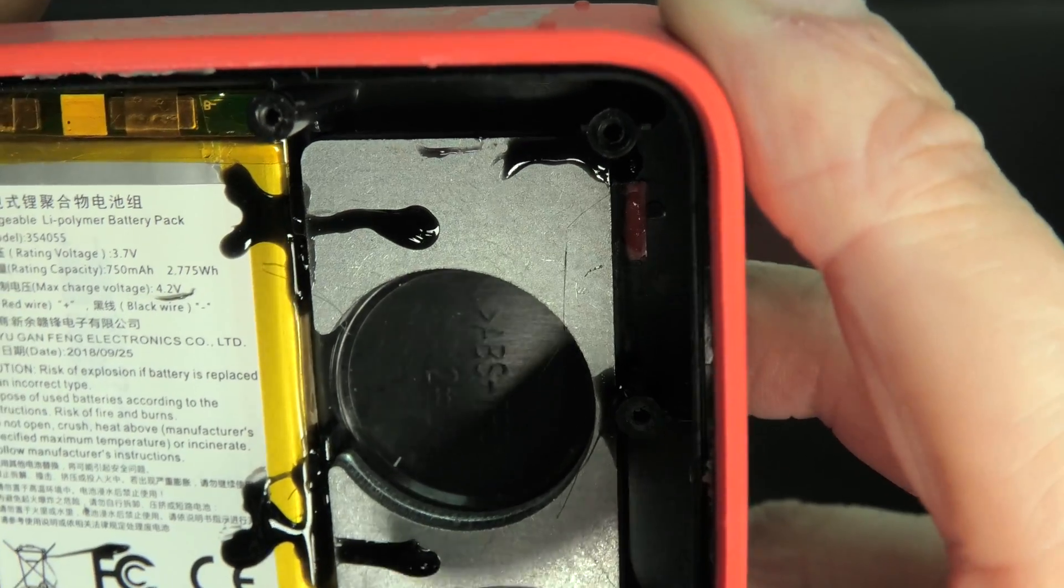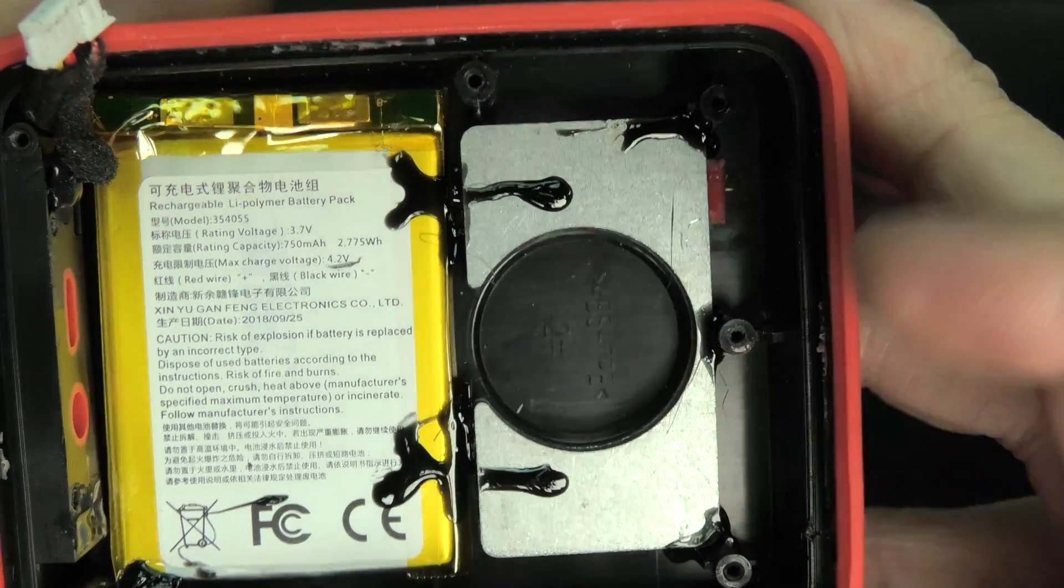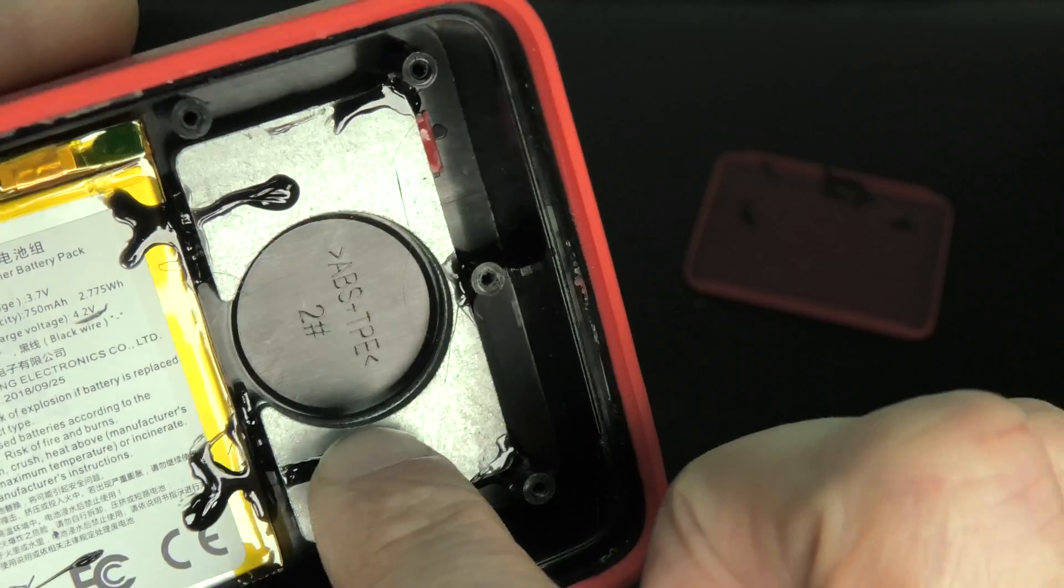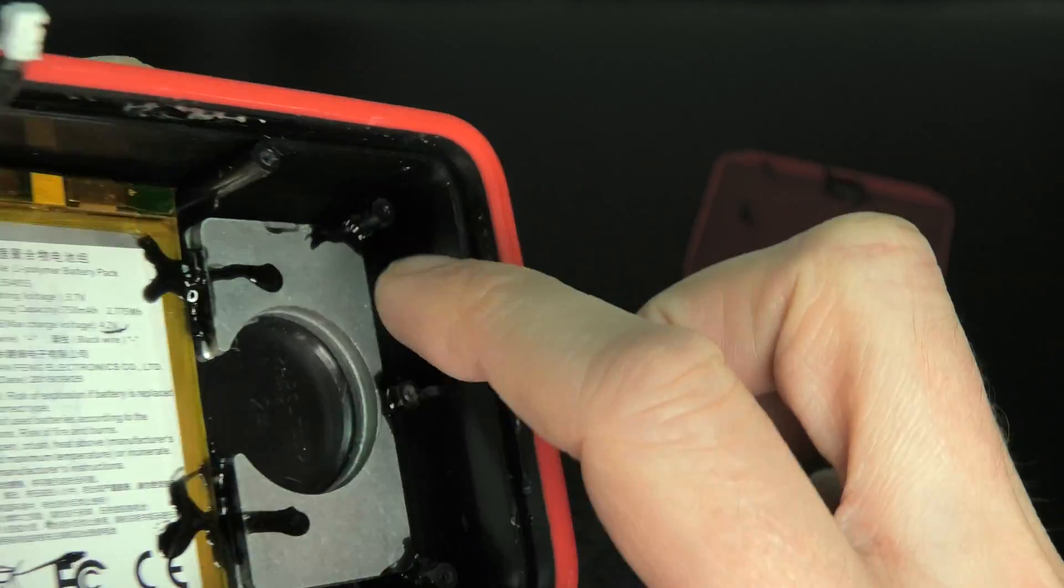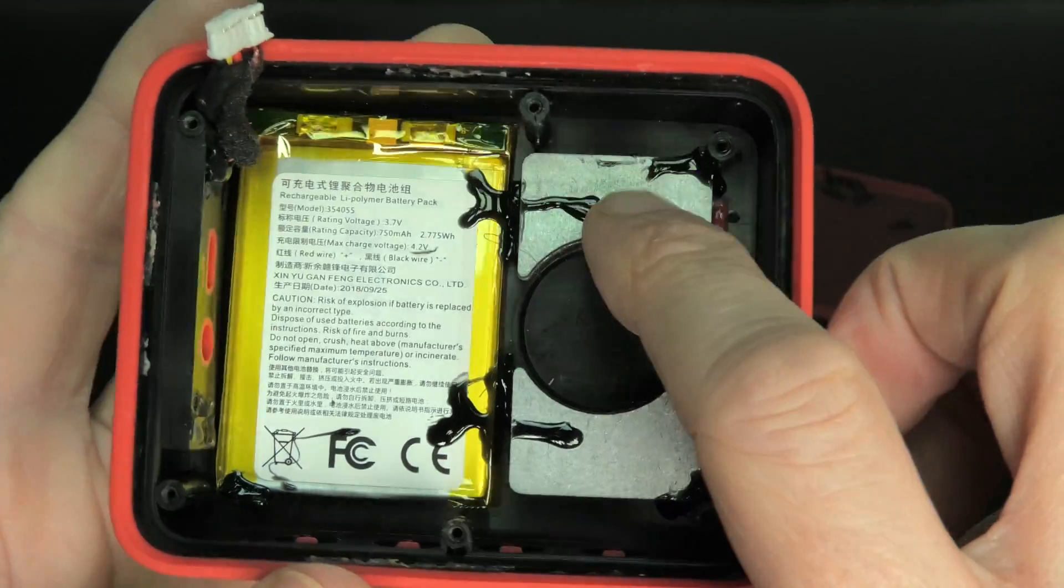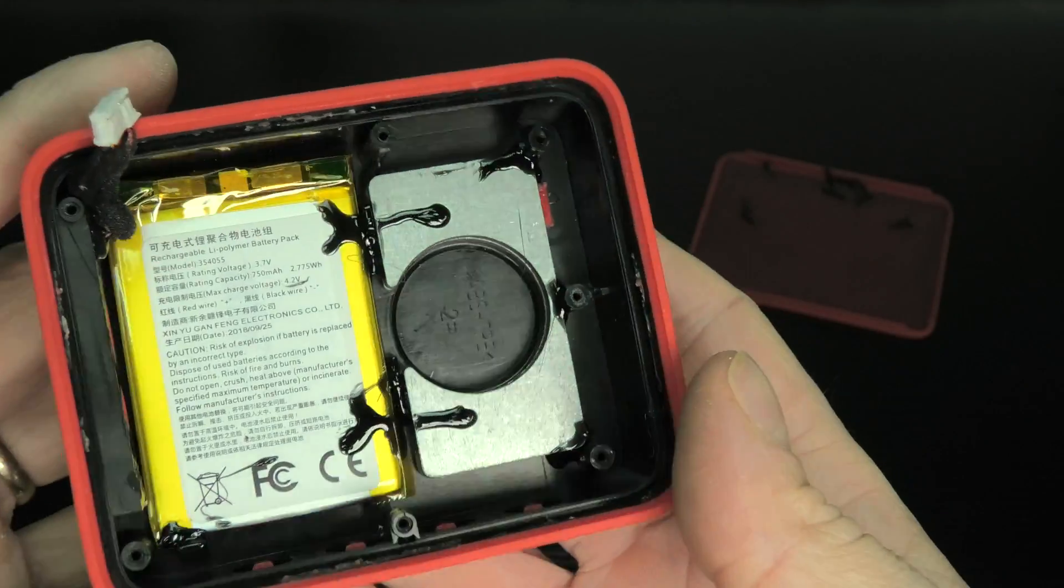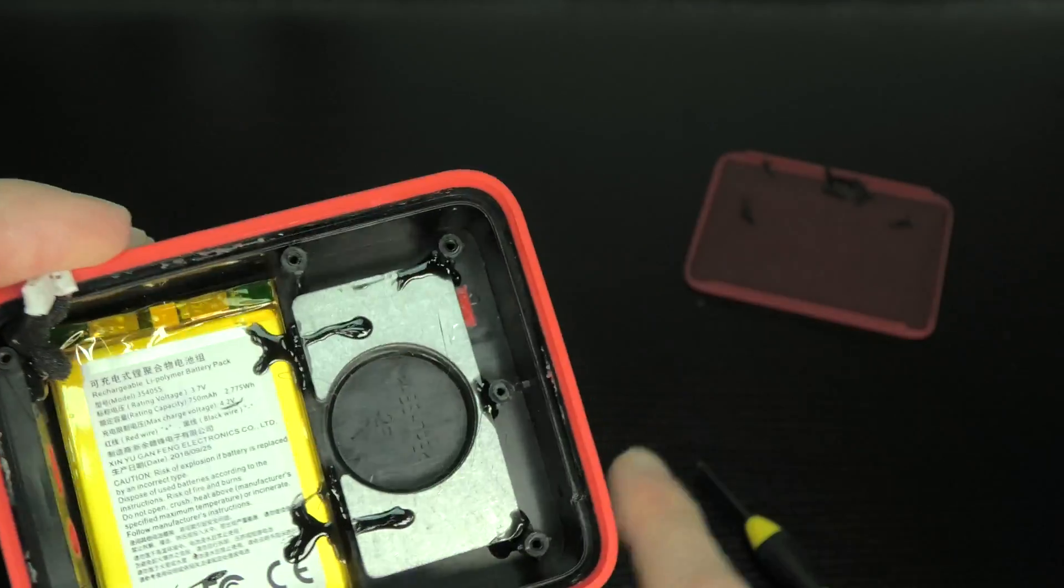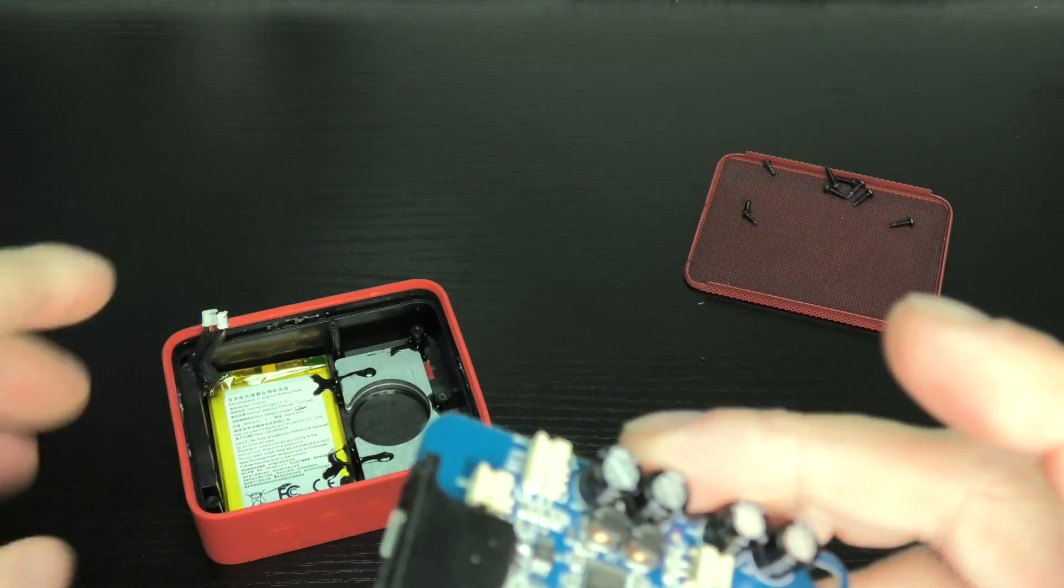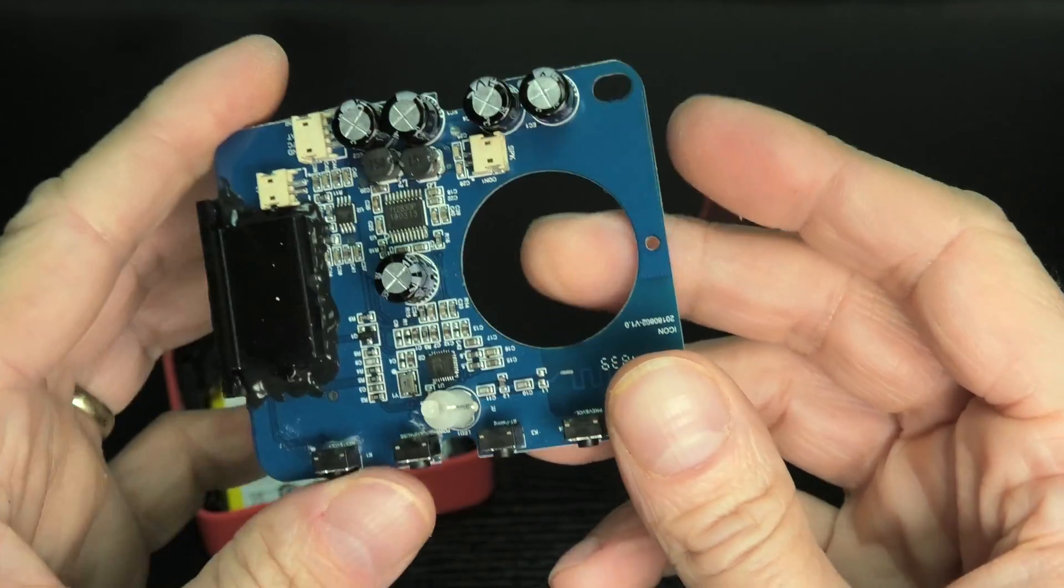And on the right side here you see the black hole, that's where the transducer goes into. And then also here this big chunk of metal to weigh down the speaker to give it some weight, and probably also for audio quality or to reduce the vibration.